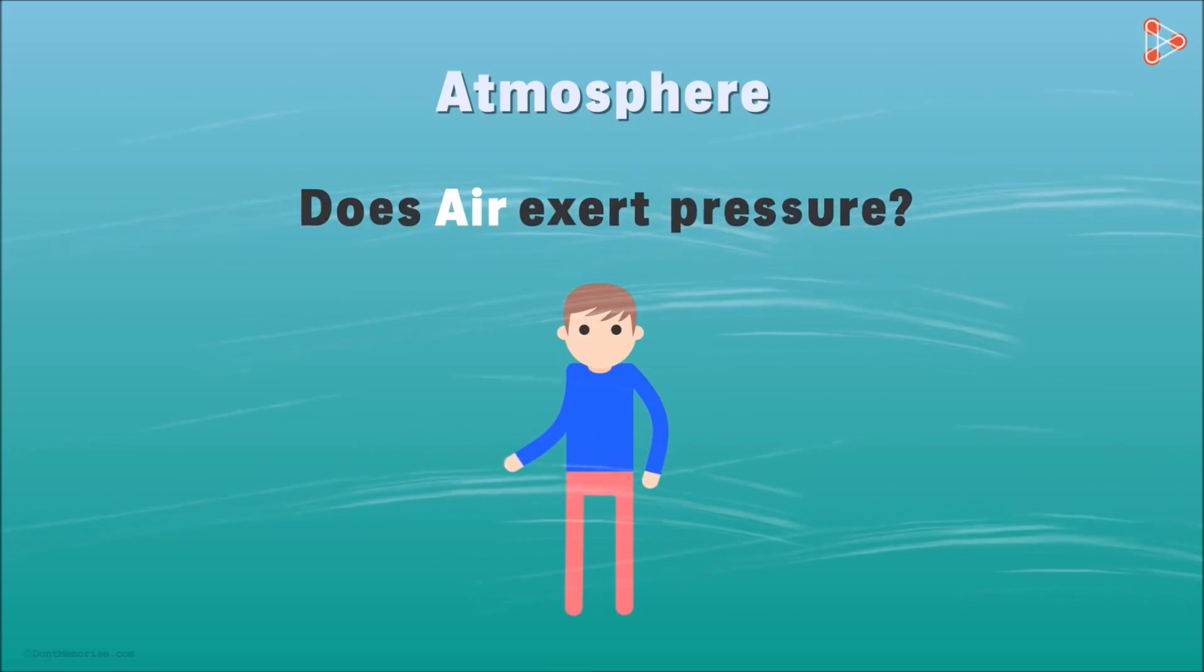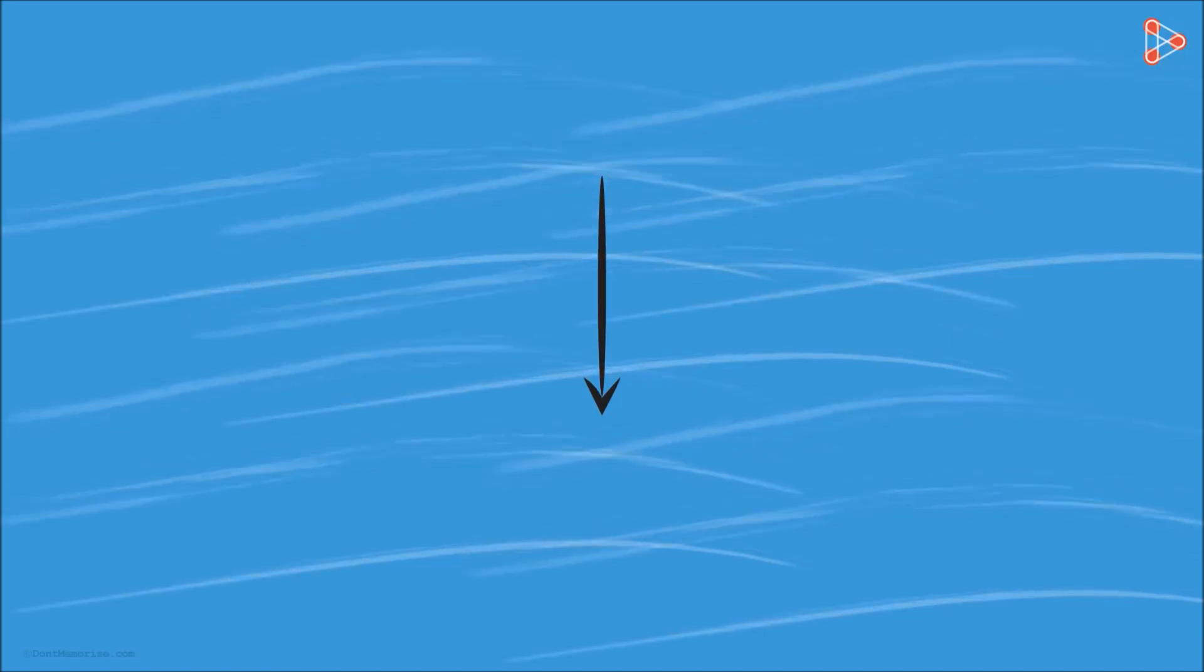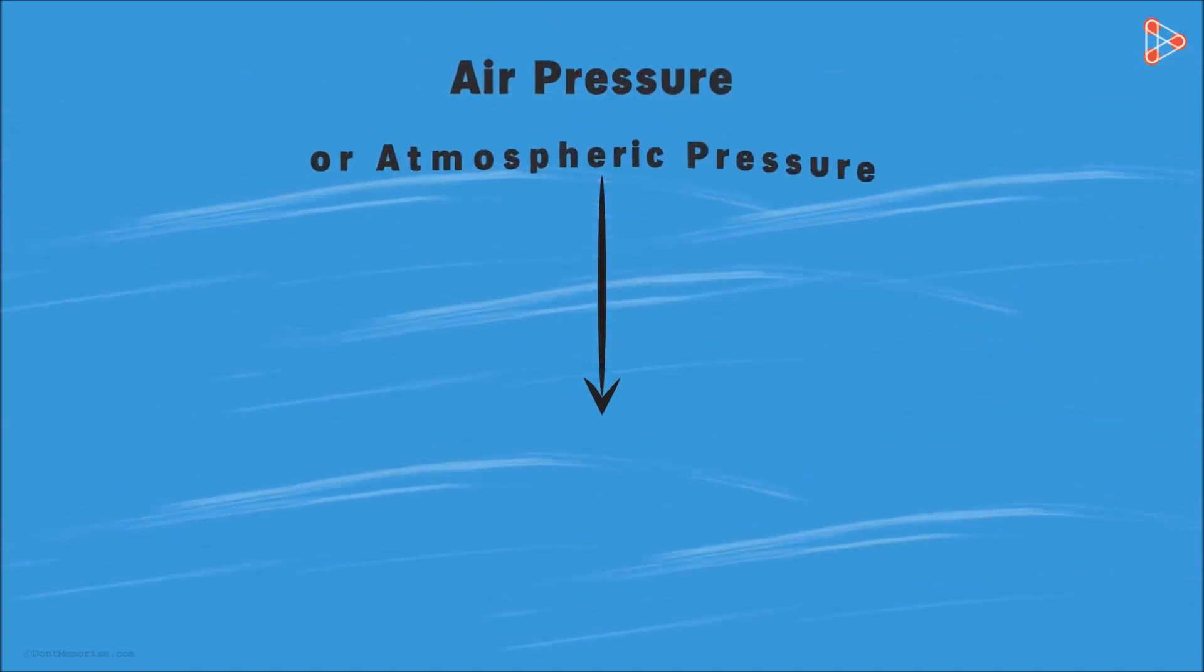Does air also exert pressure on objects on the earth? Air is also being pulled down by the earth's gravitational force. This force applies pressure on the air in the downward direction. The pressure exerted by air is called air pressure or atmospheric pressure.